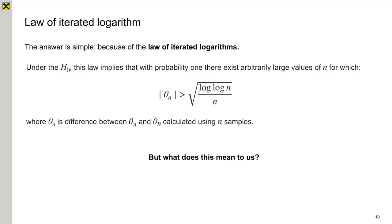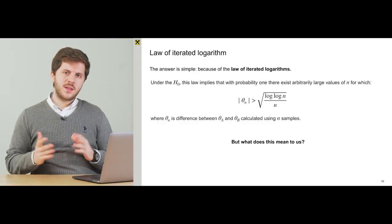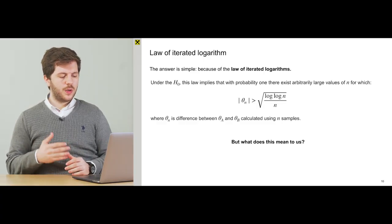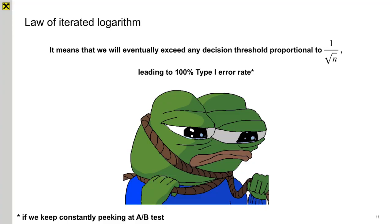There is such thing as the law of iterated logarithm that says that under null hypothesis, with probability 1, our statistic or our effect will cross this decision boundary because it's proportional to the square of log log n divided by n, which is asymptotically bigger than 1 divided square of n. And what does this mean to us? What should we know about this? And I think that we should understand that we will eventually exceed this decision threshold and it will lead to 100% type 1 error rate.